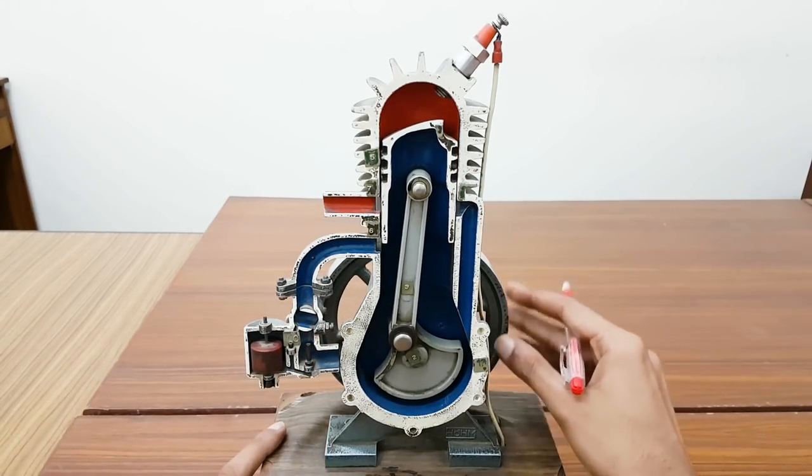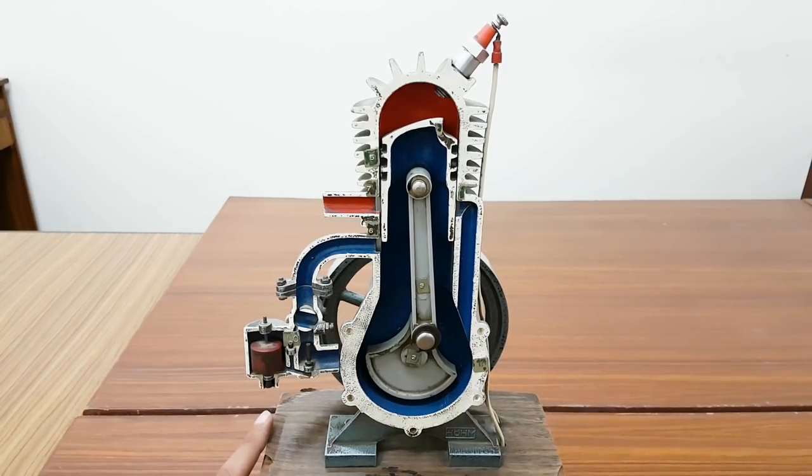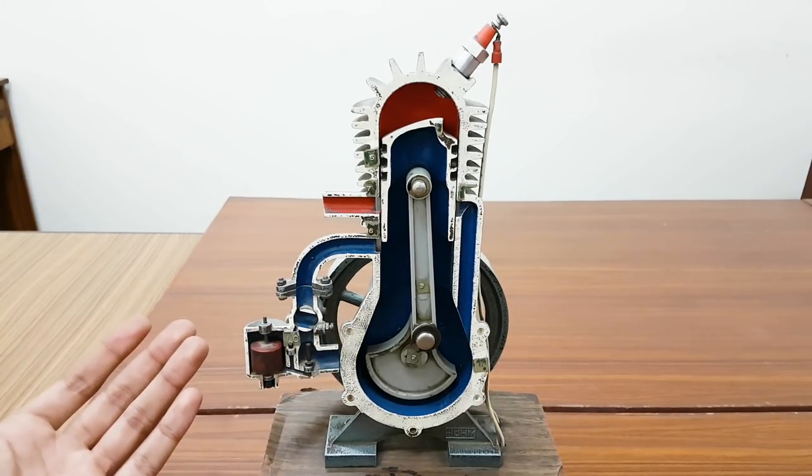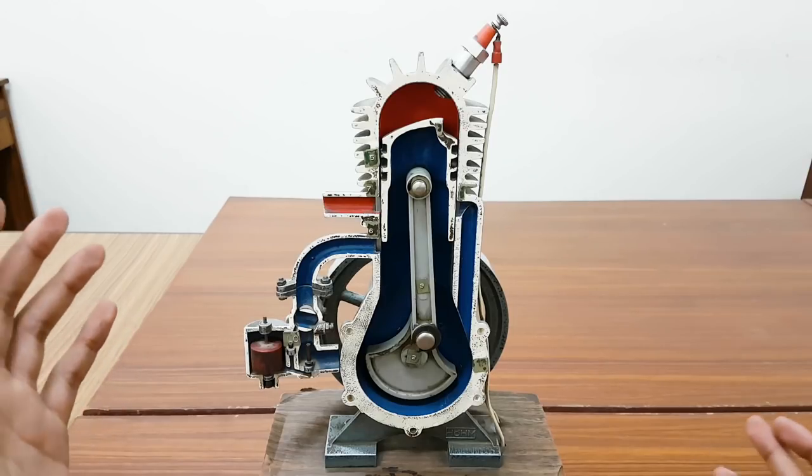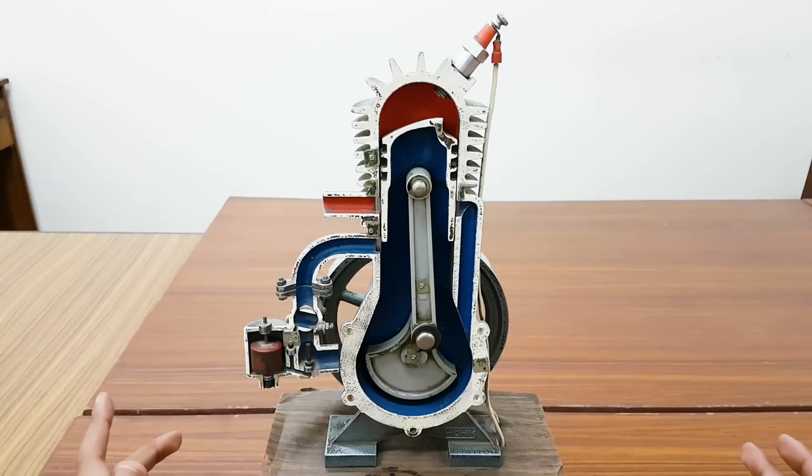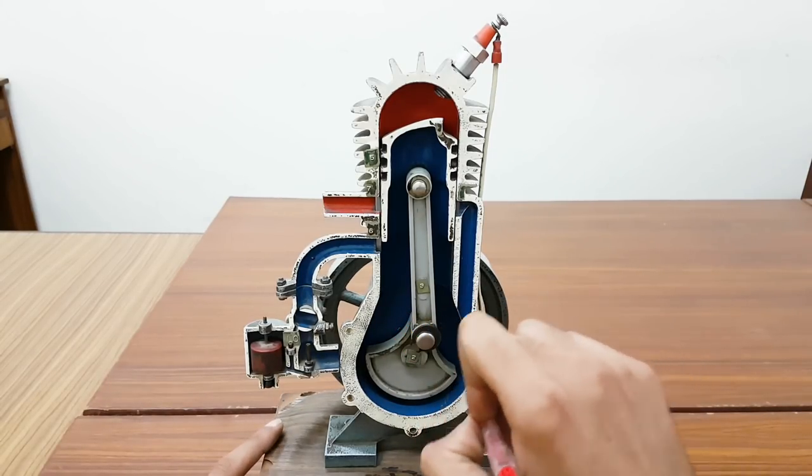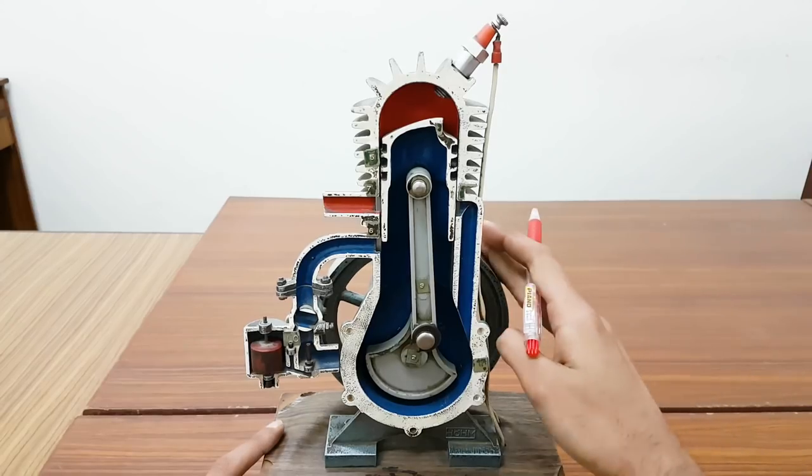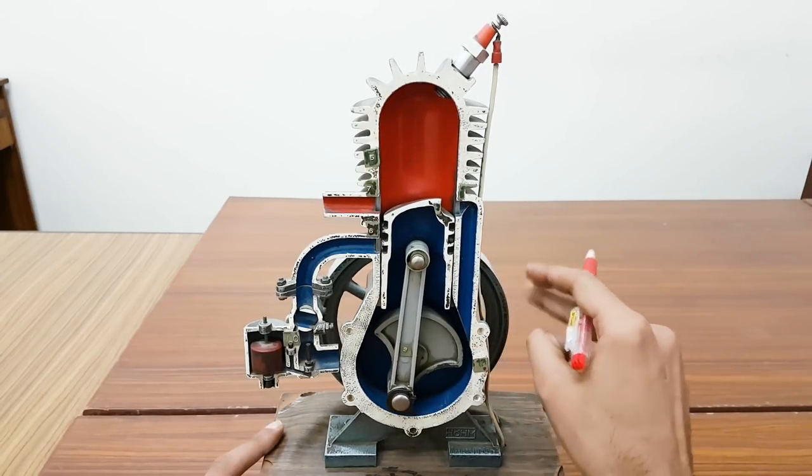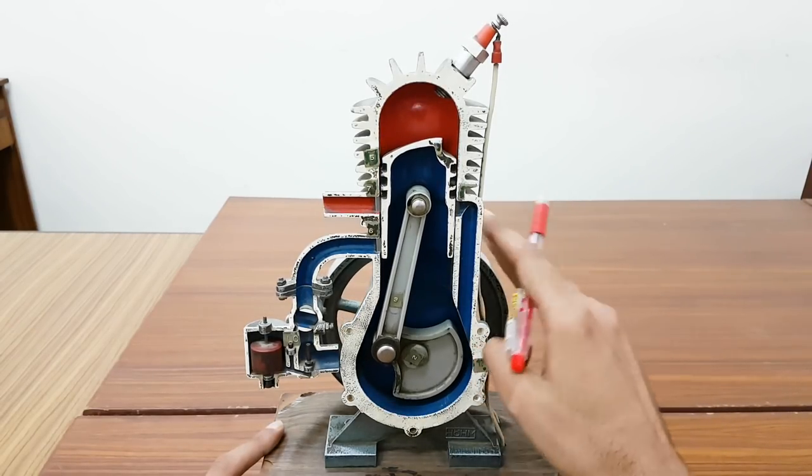Whereas in the four-stroke engine, it has four operations. Why four-stroke? Because it receives only one power stroke in every 720 degrees, meaning two revolutions. After every two revolutions it gets a power stroke, whereas at every 360 degrees or every single revolution, your two-stroke engine gets a power stroke.